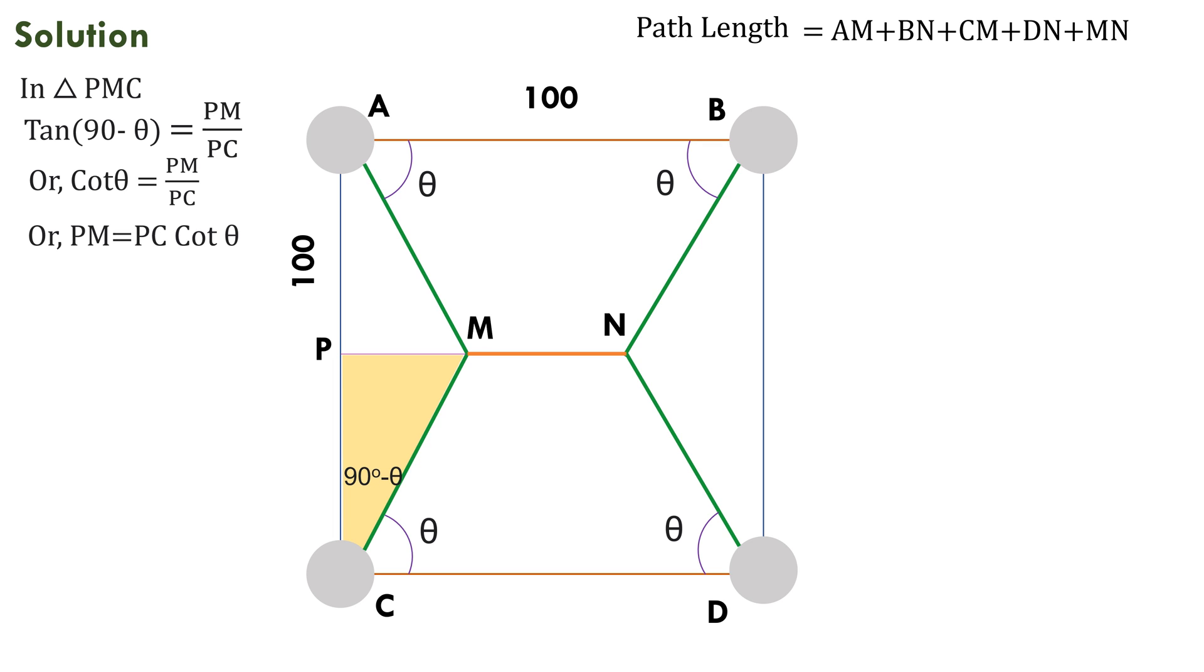Here PC equals AC by 2 equals 100 by 2 equals 50. Therefore PM equals 50 cot theta. Now MN equals 100 minus 2 times PM equals 100 minus 100 cot theta.